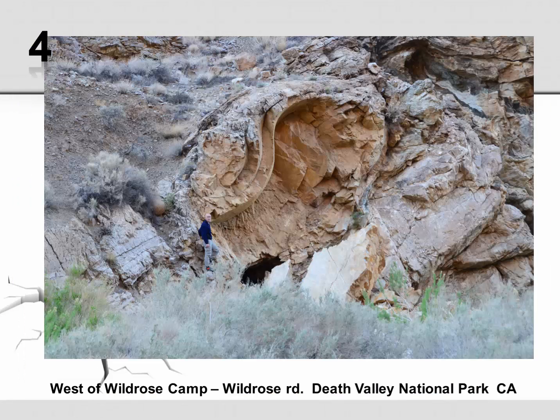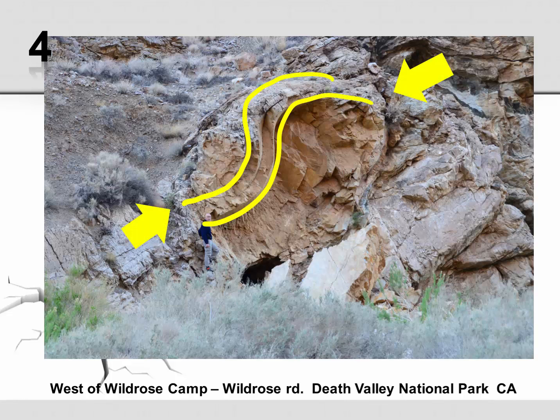Number four is along Wildrose Road in Death Valley National Park. We can obviously see folds, and these folds must have formed from compression or convergent motion.